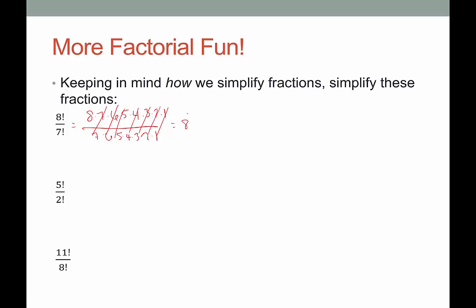What I'm going to do instead — remember the factorial is just the number you're starting with times every positive integer smaller than it. So if I start writing out 8 factorial, I could write it as 8 times 7 factorial. That's 8 times 7 times 6 times 5 times 4 times 3 times 2 times 1. Then looking at the denominator, I have a 7 factorial down there too. So 7 factorial is a common factor of both, and I can cross those out and end up with 8 in a much quicker way.